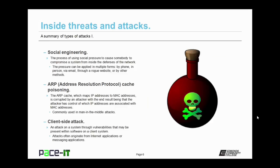ARP cache poisoning is a threat and an attack. The ARP cache, which maps IP addresses to the MAC addresses, is corrupted by an attacker, with the end result being that the attacker has control of which IP addresses are associated with MAC addresses. ARP cache poisoning is commonly used in man-in-the-middle attacks. A client-side attack is an attack on a system through vulnerabilities that may be present within software on a client system. The attacks often originate from internet applications or messaging applications, but they attempt to exploit a vulnerability on software that resides on a client machine inside of the defenses of the network.